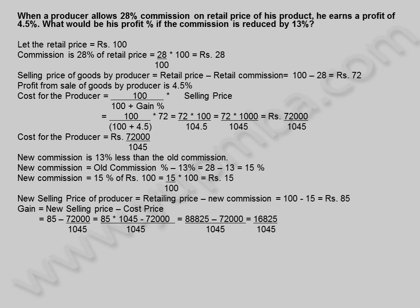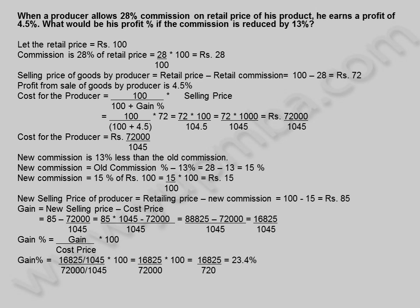Gain = new selling price minus cost price = 85 − 72000/1045 = (88825 − 72000)/1045 = 16825/1045. Gain percentage = (16825/1045) / (72000/1045) × 100 = 16825 × 100/72000.